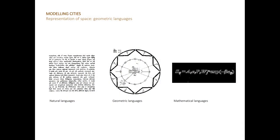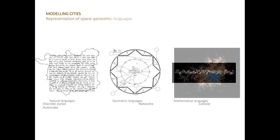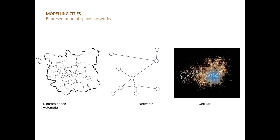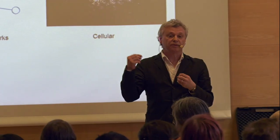If we're talking about representation of space, we focus on geometric languages of different kinds. Going into representation of space, there's a myriad of different ways of doing this. Often what we do in geography, describing cities, is using what we call discrete zones — different regions filled with some kind of information, for instance population, allowing us to calculate different population densities in different parts of a city.